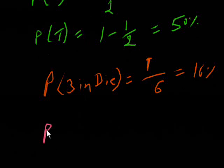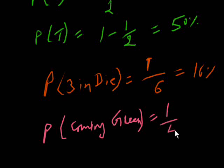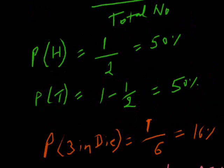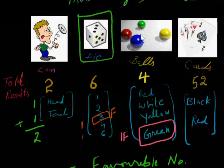The probability of the green ball coming: favorable number is 1, total number of balls is 4. So this is a 25% chance of the green ball coming.